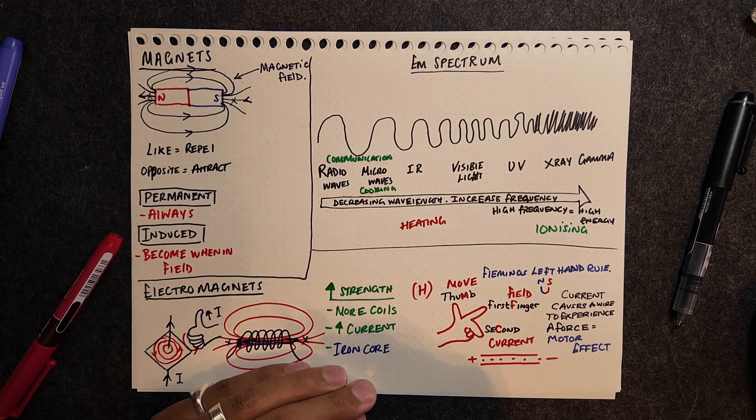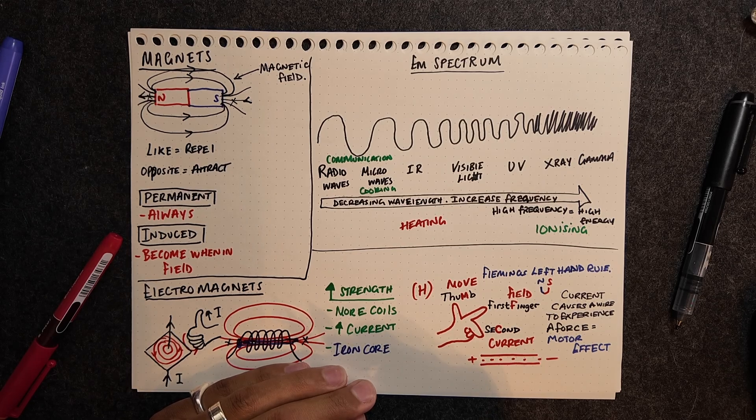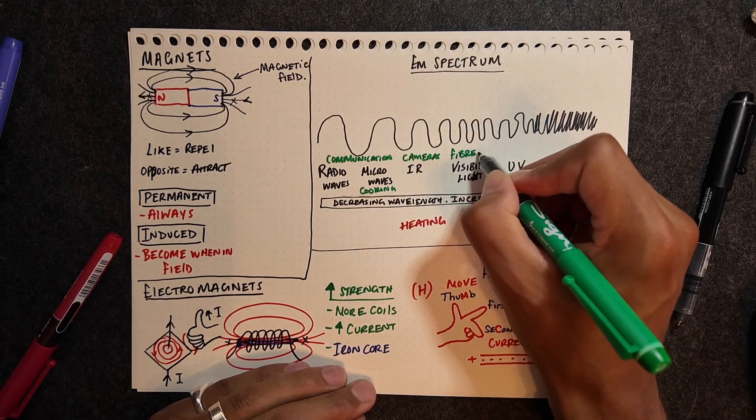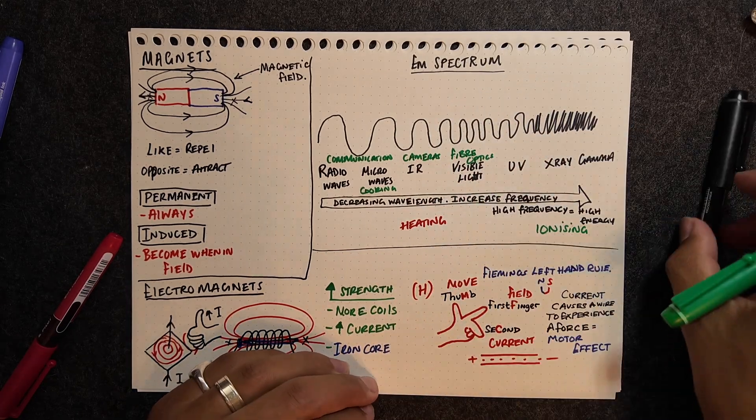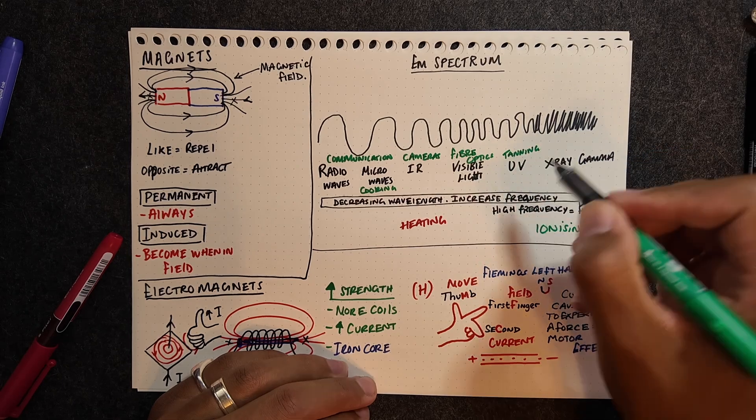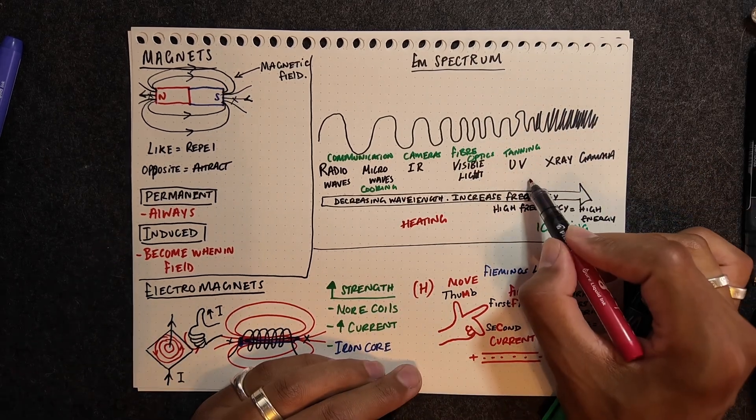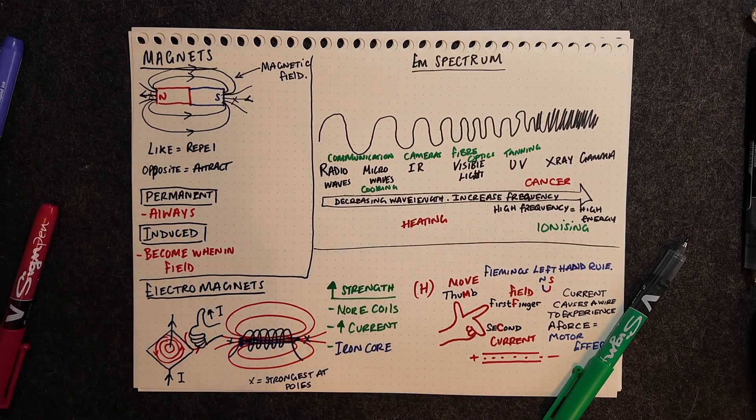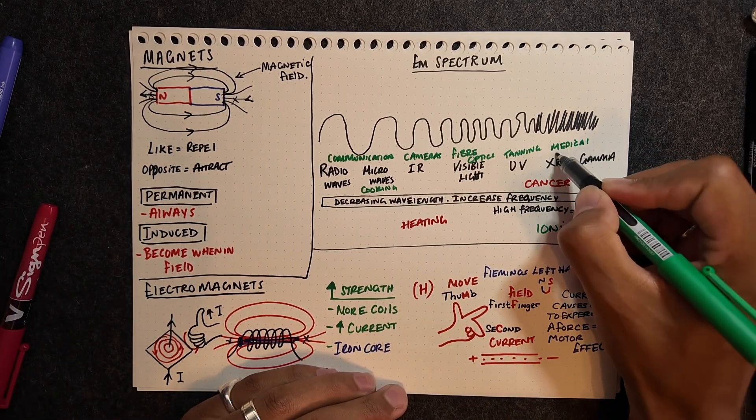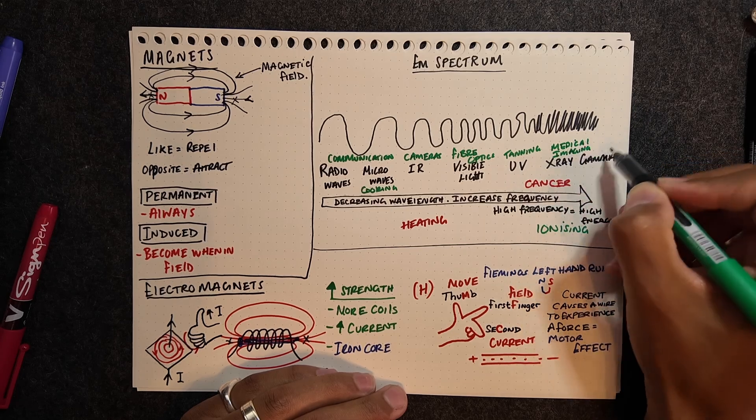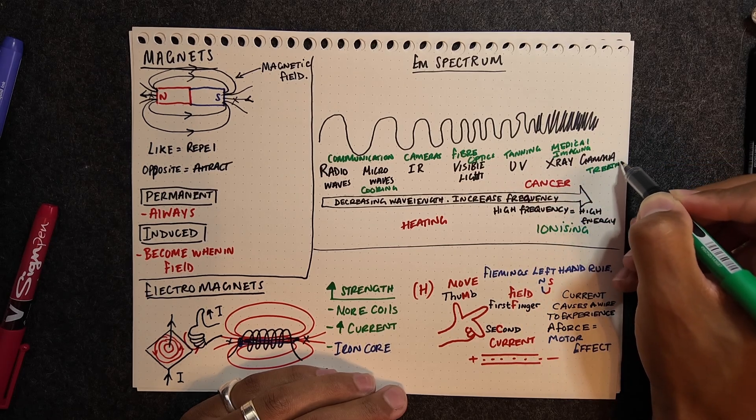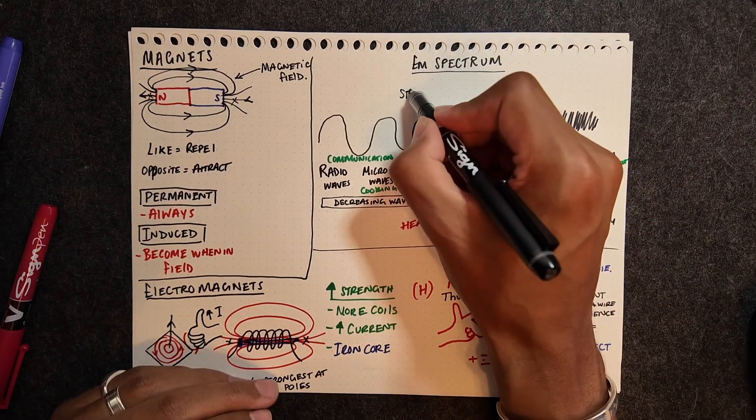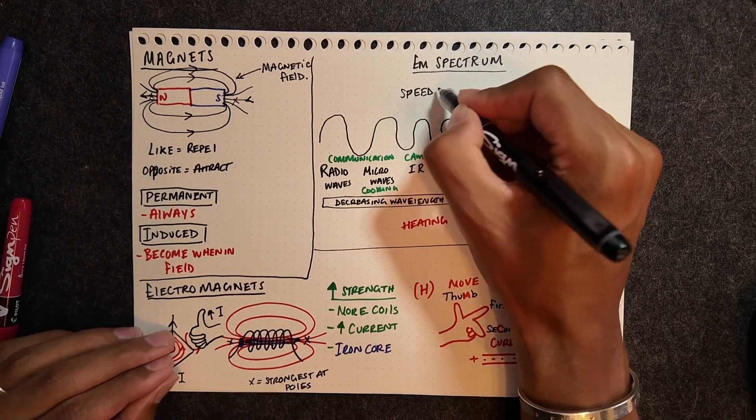You need to know the uses of each of these. Radio waves can be used for communication, microwaves can also be used for communication, but for cooking as well. Infrared can be used in infrared cameras, visible light can be used in fiber optics, UV can be used for tanning, which could potentially lead to cancer. The x-rays can be used for medical imaging, again they're ionizing, so it could potentially lead to cancer, and then gamma can be used for medical treatment as well.